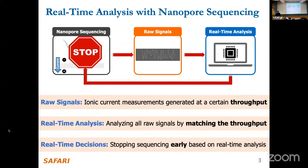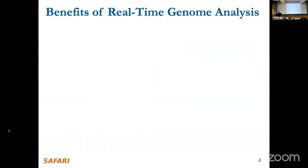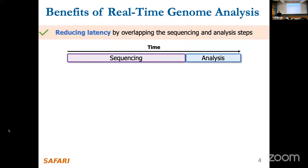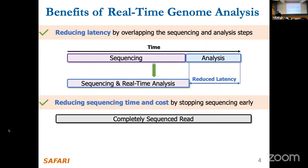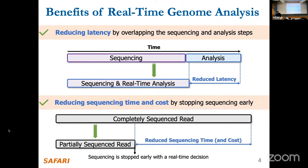One particular benefit of real-time analysis is the ability to make real-time decisions — we can actually stop the sequencing of a read or the entire sequencing run early. There are mainly two benefits: first, it reduces the entire latency of genome analysis by overlapping the sequencing time with the analysis time. Second, we can stop the sequencing of a single read or the entire run rather than sequencing it fully, which has the potential to reduce sequencing cost and time significantly.